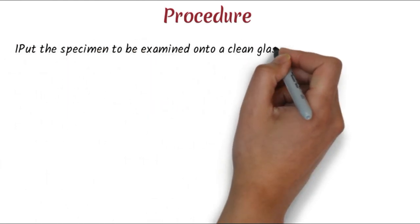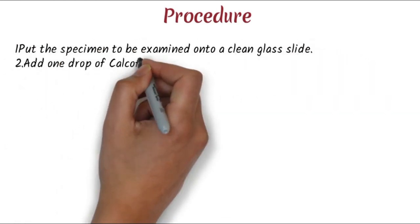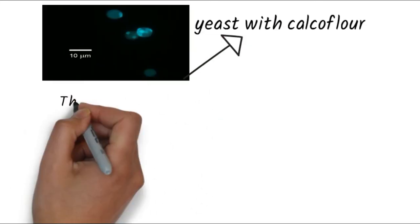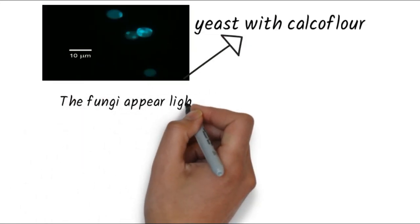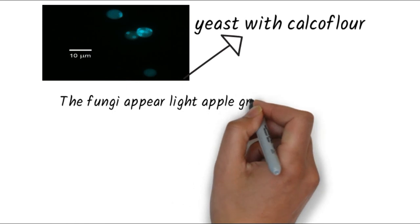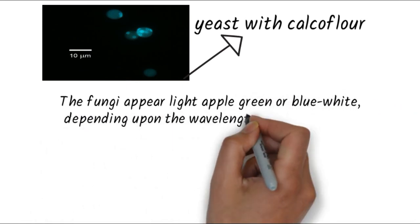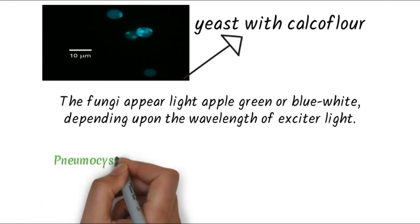The procedure for calcofluor white: put the specimen on a clean glass slide, add one drop of calcofluor white stain and one drop of 10% potassium hydroxide. Place a cover slip over it and allow the specimen to stand for one minute for staining. Examine the slide under UV light. With calcofluor white, fungal elements mainly appear bluish-white in color, but sometimes appear apple green due to the wavelength filter. It is mainly used for Pneumocystis cysts.